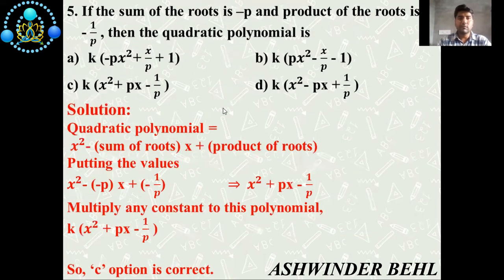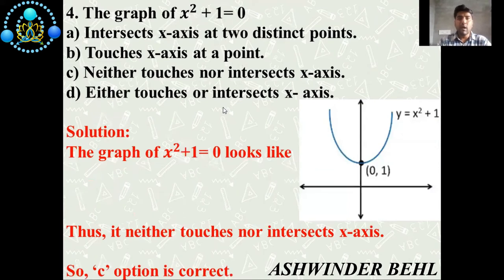Now we will discuss fourth question. The graph of x² + 1 = 0. Four options are there: a) Intersects x-axis at two distinct points. b) Touches x-axis at a point. c) Neither touches nor intersects x-axis. d) Either touches or intersects x-axis.